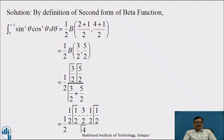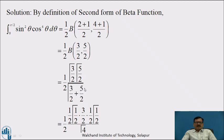I hope you have completed. Now by definition of the second form of Beta Function, the integral from 0 to π/2 of sin²θ · cos⁴θ dθ is equal to (1/2) · Beta((2+1)/2, (4+1)/2), that is (1/2) · Beta(3/2, 5/2). Using the relation between beta and gamma functions, this equals (1/2) · Γ(3/2) · Γ(5/2) divided by Γ(3/2 + 5/2), that is Γ(4), applying the reduction formula of the gamma function.